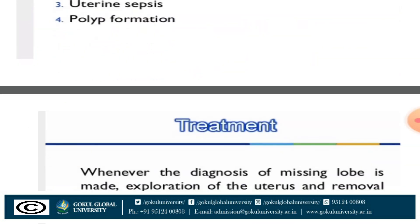The clinical significance of placenta succenturiata: if the succenturiate lobe is retained following birth of the placenta, it may lead to postpartum hemorrhage and subinvolution. Subinvolution means the reproductive organ does not revert to the non-pregnant state. It can also lead to uterine sepsis, where the retained succenturiate lobe causes infection of the uterus, and polyp formation.